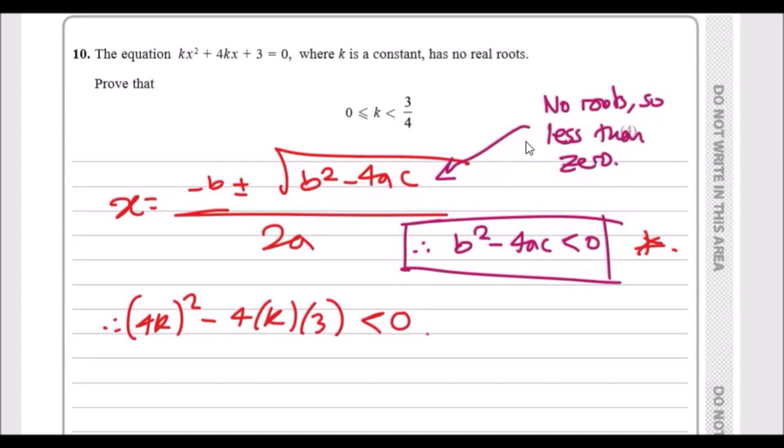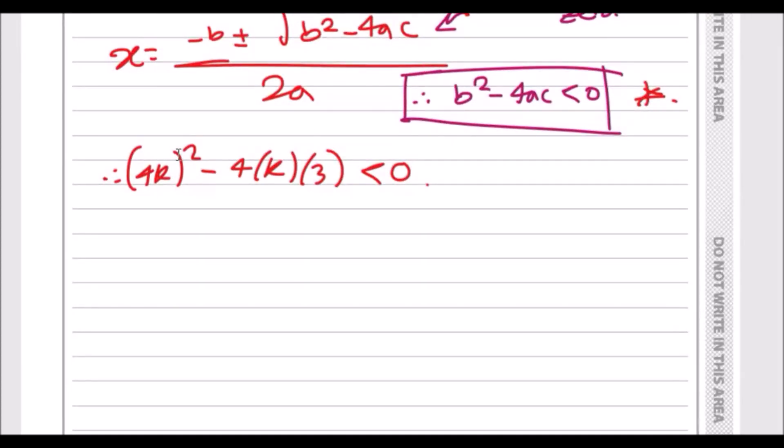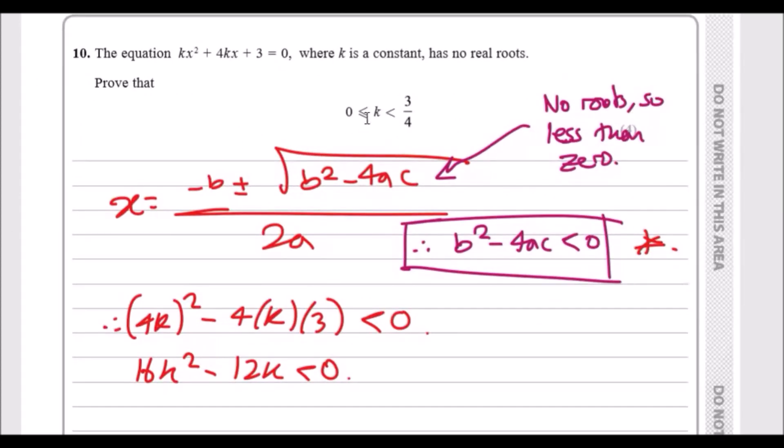Expanding this, we've got 4k squared - that's 16k squared - minus 4 times 3 times k is 12k. You can kind of figure out we've almost got the answer.